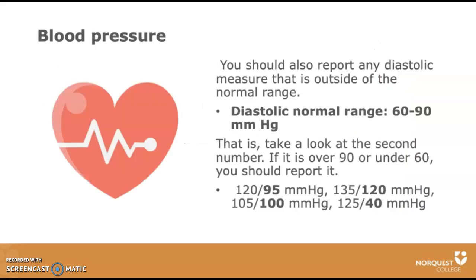You should also report any diastolic measure that is outside of the normal range. The normal range is 60 to 90. Take a look at the second number — if it is over 90 or under 60, you should report it.